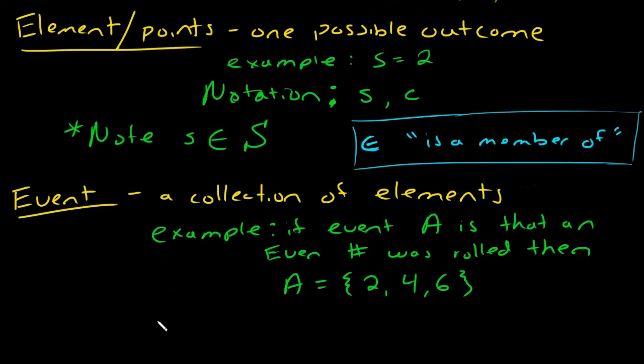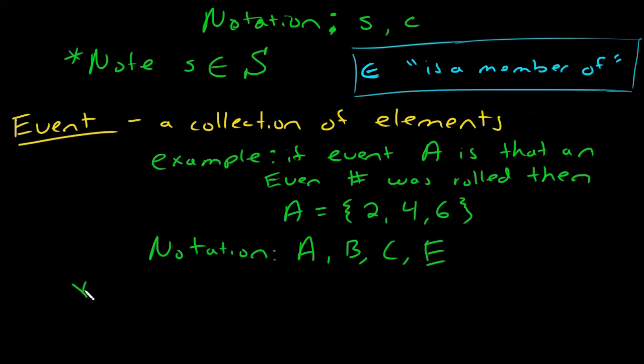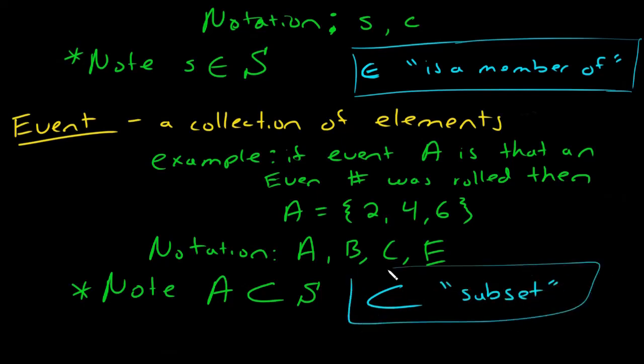So notation-wise, you'll often see events referred to with capital letters. So A, B, C, I also see E quite a lot, E standing for event. Also I want us to note, before we move on from event, that an event is a subset of the sample space.